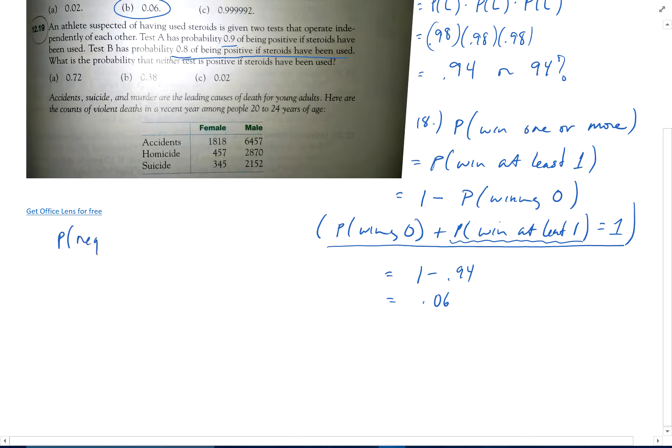That means negative and then negative. Well, what's the probability that the first test is negative? And it says they operate independently of each other, so one doesn't affect the other. So 0.1 times 0.2, which is 0.02.